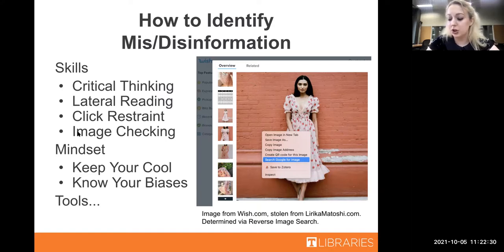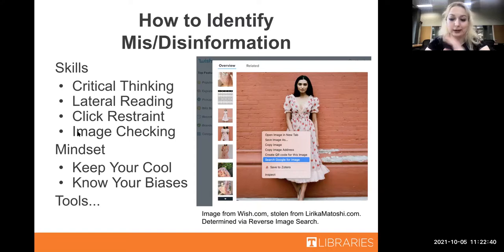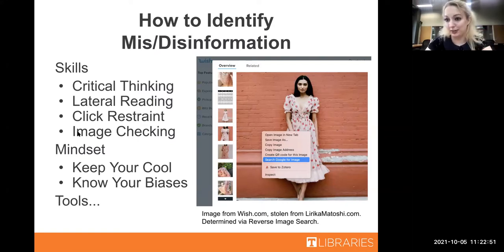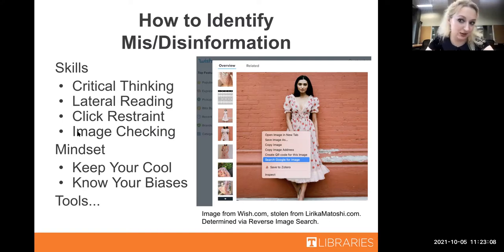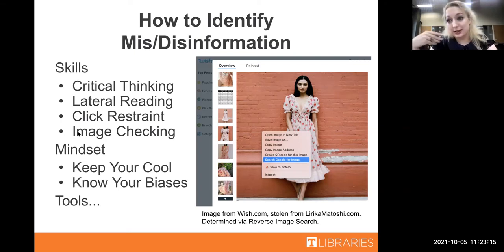You might also want to use a reverse image search or geolocation to check the veracity of an image or see where it actually comes from. Here's an example: I was on Wish.com, looked up 'strawberry dress,' and found an image. As someone who knows a lot about fashion, I automatically knew the website it was from - it was a Lyrica Mitoshi dress that Wish.com was trying to pass off as their own. When I right-clicked on the image and selected 'Search Google for image,' that brought up the reverse image search results, and sure enough the first link was to the Lyrica Mitoshi website. You can do this with more than just items - you can do it with places to see if an image actually occurred where someone claims.